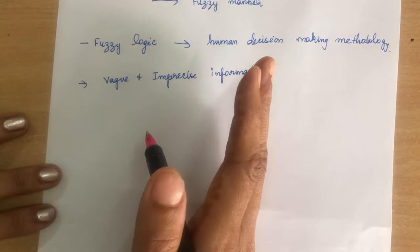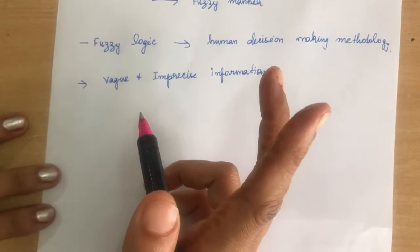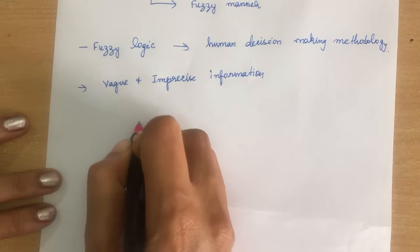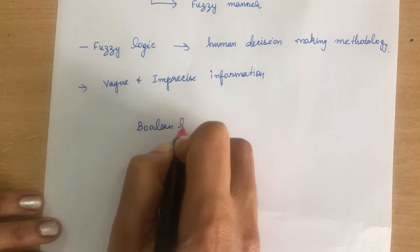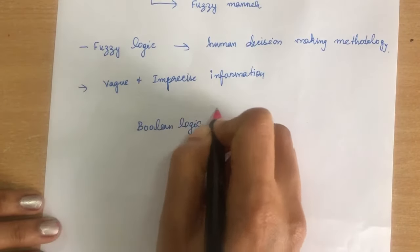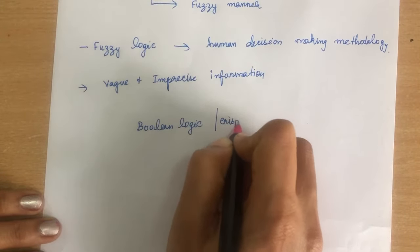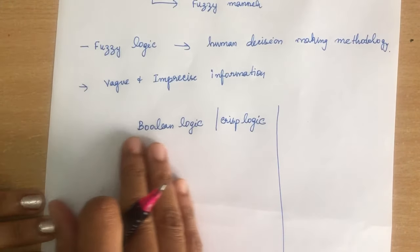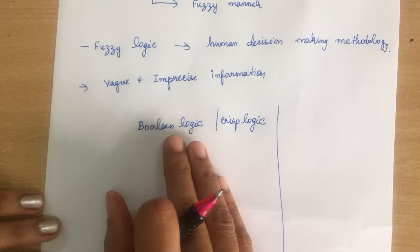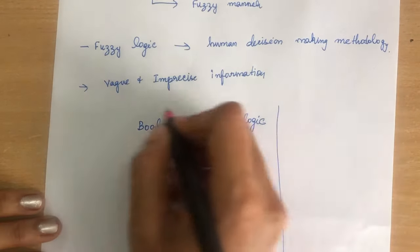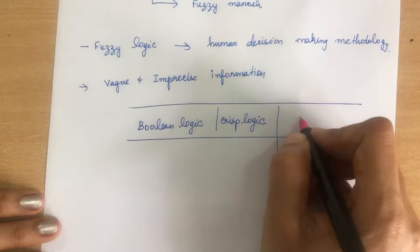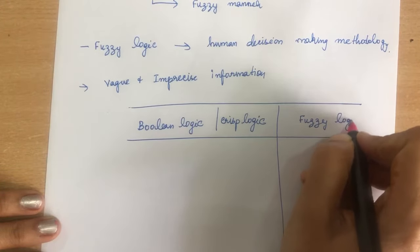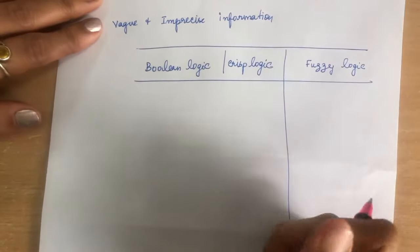Now let me tell you the difference between two logics. There are two logics available. One is the existing logic called Boolean logic, otherwise known as crisp logic — used for solving all mathematical functions. The other logic which came into existence is fuzzy logic.